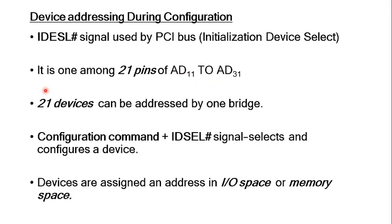A single bridge can address 21 different devices. To configure a device, the PCI bridge sends a configuration command through the C/BE (command/byte enable) line, which is 4 bits in size. A configuration command is placed on that line, and along with it the IDSEL signal is sent through the appropriate pin. For example, to configure the second device on the PCI bus, the automatic setup sends the appropriate configuration command through the C/BE line and activates the IDSEL signal on AD 12. Once devices are configured locally within the PCI bus and are ready to be used, they must be assigned a system-level address so they can participate in normal IO operations or system-level calls.